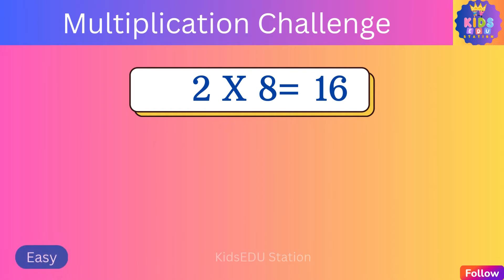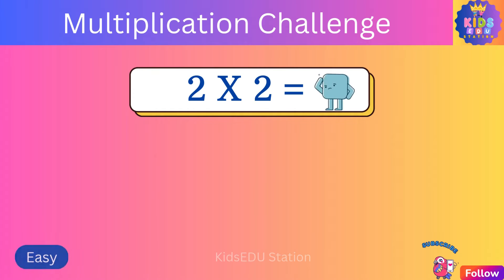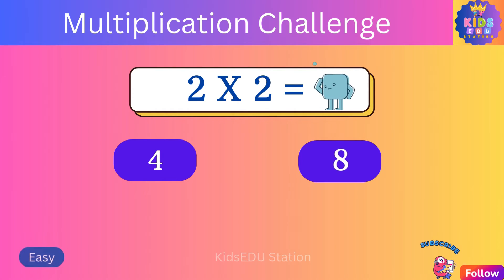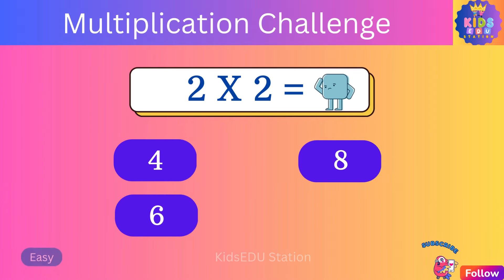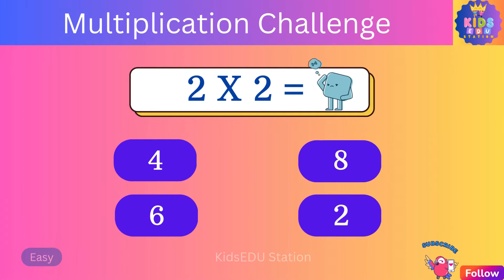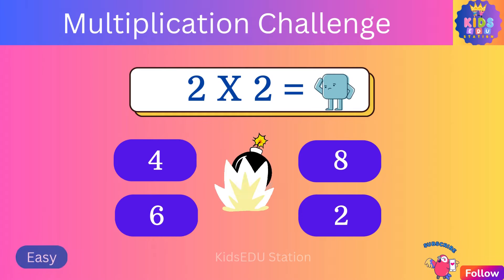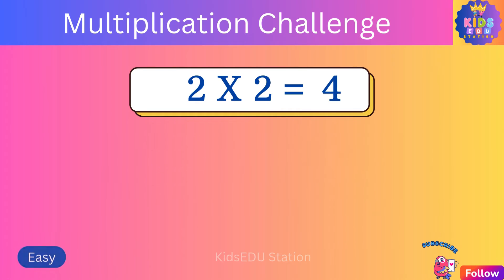Three times ten is thirty. What is four times five? Fifteen, twenty, thirty-five, twenty-five. Four times five is twenty. What is two times eight? Eighteen, twelve, twenty, sixteen. Two times eight is sixteen. What is two times two? Four, eight, six, two. Two times two is four.